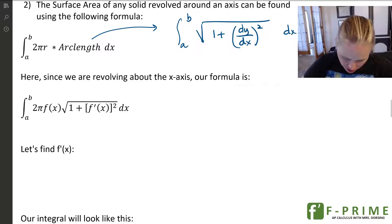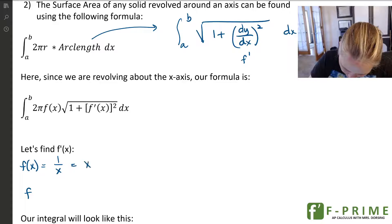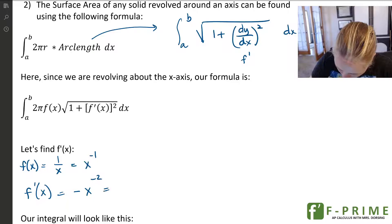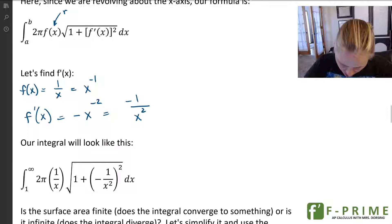But here, we're going to use it in kind of this context of finding the surface area. So first, let's find, we need to find f'(x). We need to find that derivative of our function. So if f(x) is 1 over x, that means f'(x) is going to be negative x to the negative 2, or negative 1 over x². So now I'm ready to plug everything in. Keep in mind that in this setup, r is the function. It's the same function we use for our volume. So here we go.